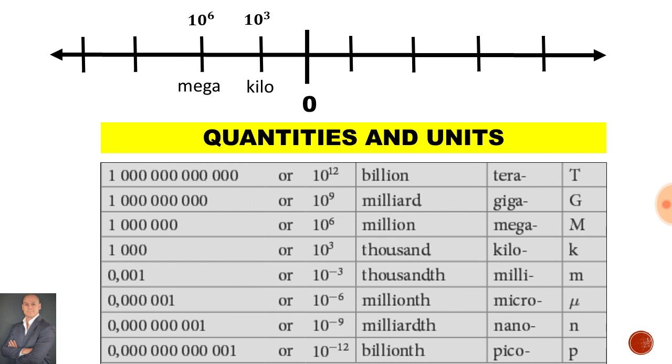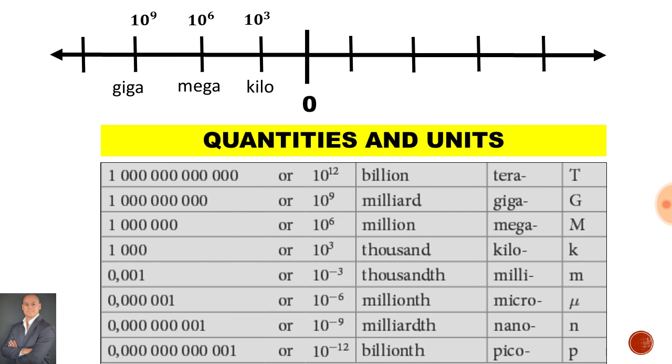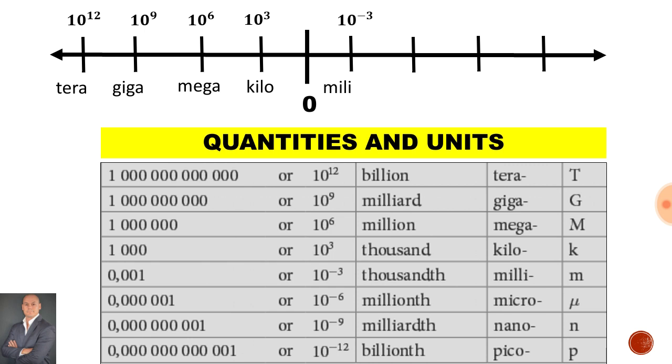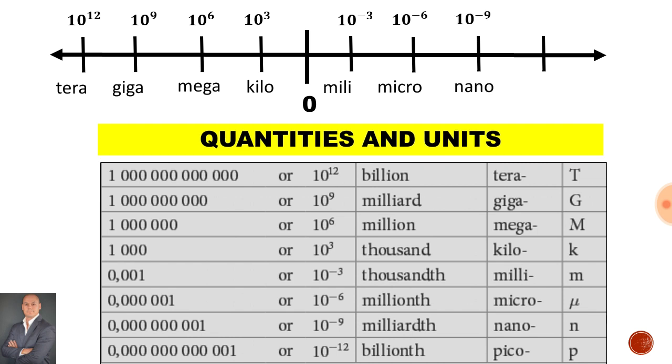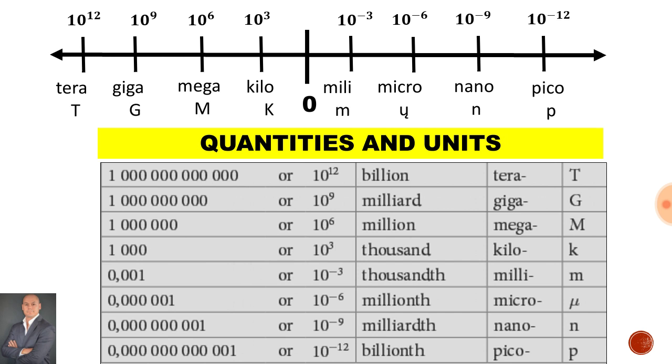10 to the 6 is mega, 10 to the 9 is giga and 10 to the 12 is terra. 10 to the minus 3 is milli, 10 to the minus 6 is micro, 10 to the minus 9 is nano and 10 to the minus 12 is pico.